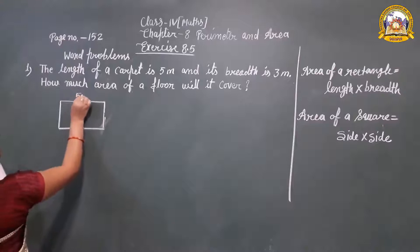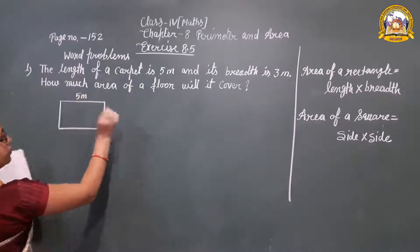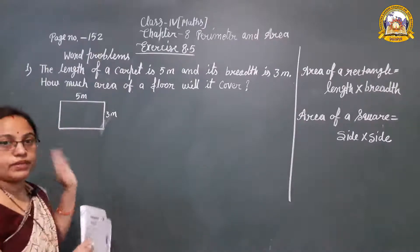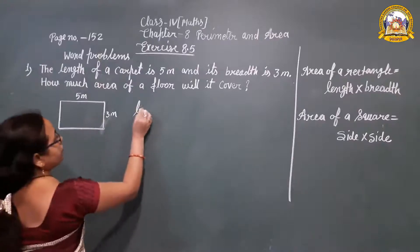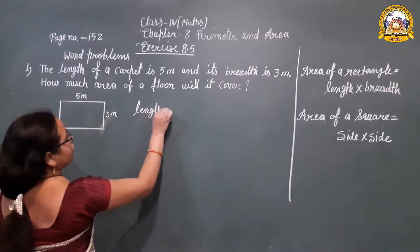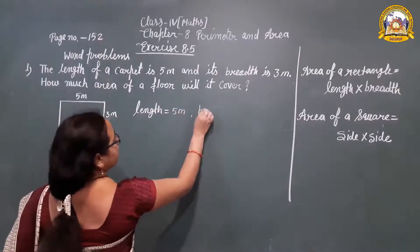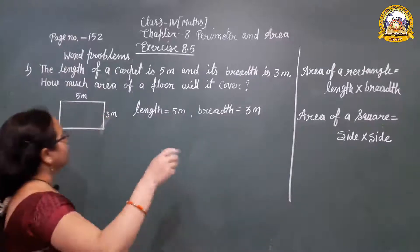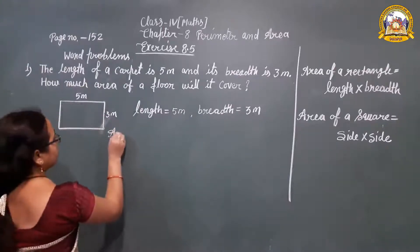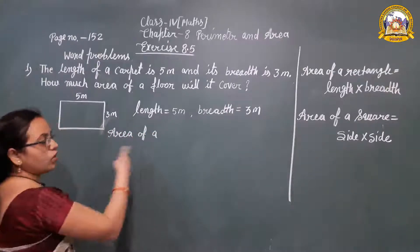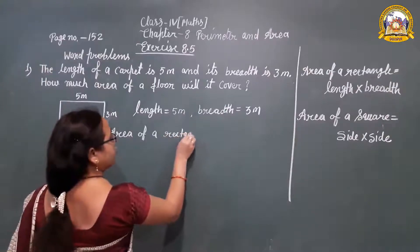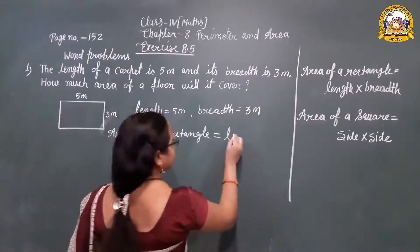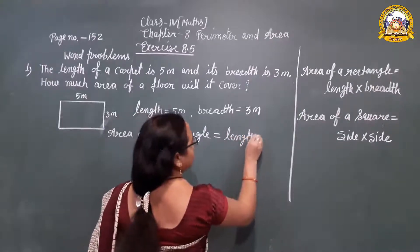The length of the carpet is 5 meters and the breadth is 3 meters. We have to find the area of the floor this carpet will cover. Since it is a rectangle, we apply the formula: area of a rectangle is equal to length into breadth.